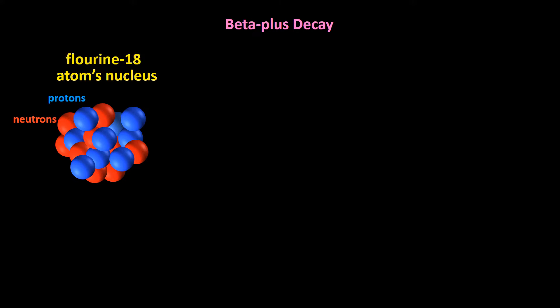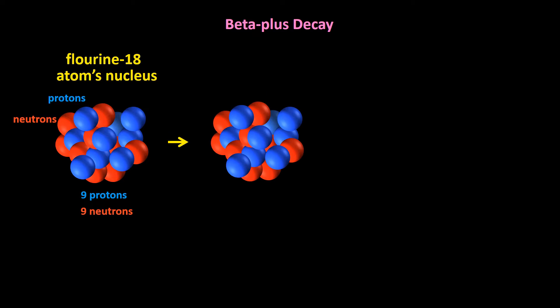Fluorine 18 is a beta plus emitter. In its nucleus, it has nine protons and nine neutrons. Let me double it up. In beta plus decay, one of the protons converts into a neutron and a positively charged electron, which is emitted at a really high speed.